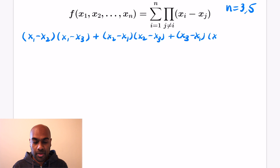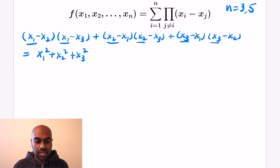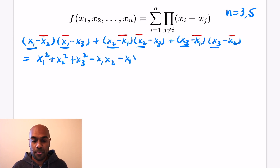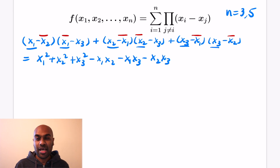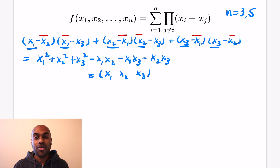Here we're writing down the actual sum. We get x1 minus x2 times x1 minus x3, then adding x2 minus x1 times x2 minus x3, etc. Looking at the expansion: first, the square of each variable appears exactly once, so we get x1 squared plus x2 squared plus x3 squared. For the cross terms — for example x1 x2 — we have a negative x1 x2 from the first product, another negative, but then a positive from the last one, giving a total of negative x1 x2. By the symmetry of the variables we also get negative x1 x3 and negative x2 x3. The question is: is this expression non-negative?